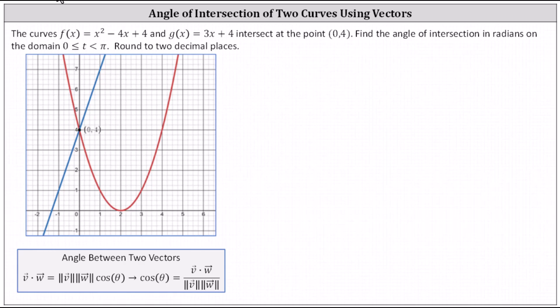In this lesson, we'll determine the angle of intersection of two curves using vectors. The curves f of x equals x squared minus four x plus four and g of x equals three x plus four intersect at the point zero comma four as shown below. Find the angle of intersection in radians on the interval from zero to pi, closed on zero, open on pi, and we're told to round to two decimal places.